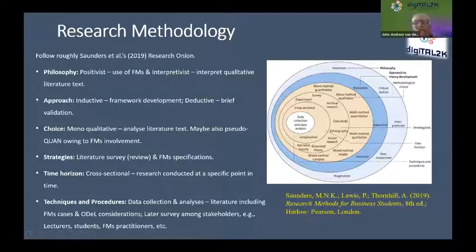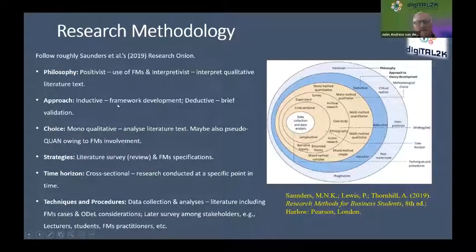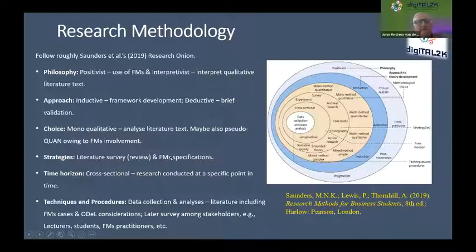The research methodology uses Saunders et al's Research Onion. Running through the layers from the outside: our philosophy is positivist because of the use of formal methods, and also interpretivist as you interpret qualitative text, words and diagrams in the literature. At the next level, our approach is inductive because we are building a framework, with a brief deductive element to validate the framework theoretically. The choice is mono-qualitative — we analyze text. And because there is mathematics involved, I call this pseudo-quantitative: not statistics, but mathematics — symbols and things like that. The strategy was literature review and specifications analysis, with a cross-sectional time horizon.